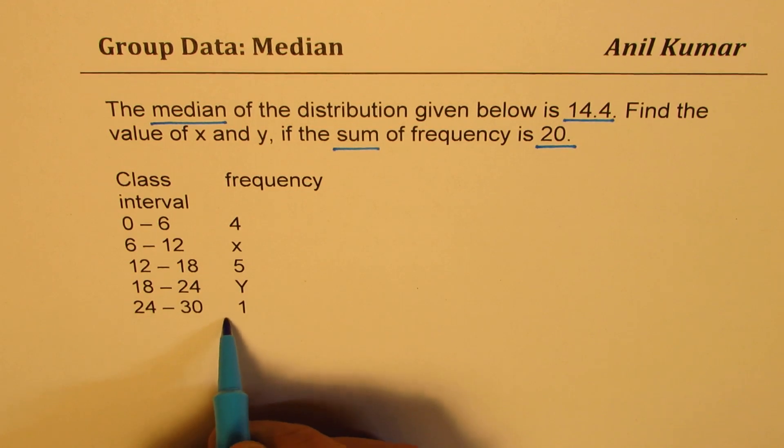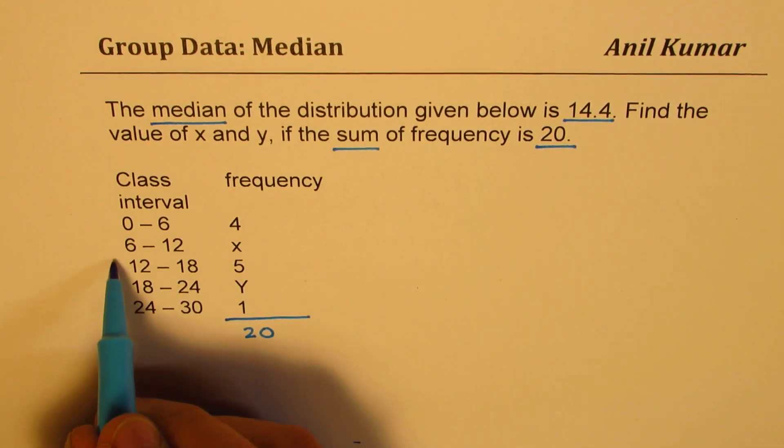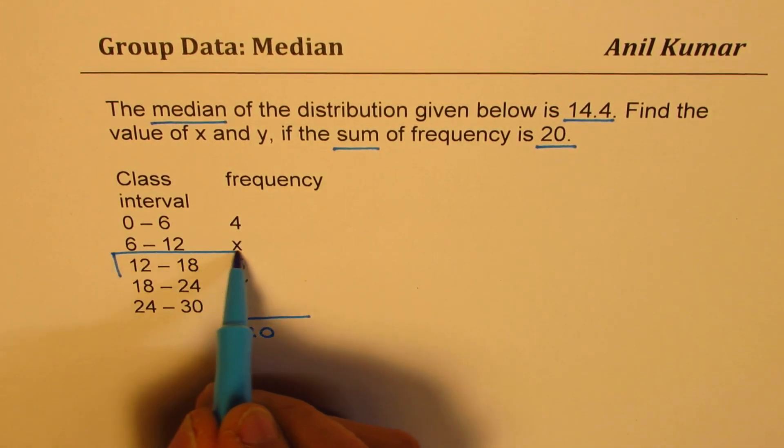So that is to say the total here is 20 and median is 14.4, that means the median class is right there.